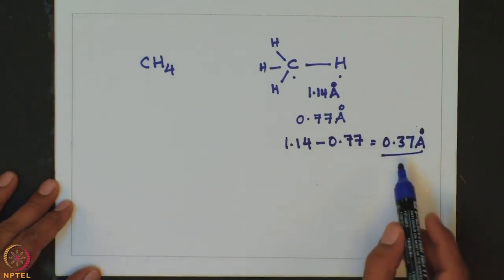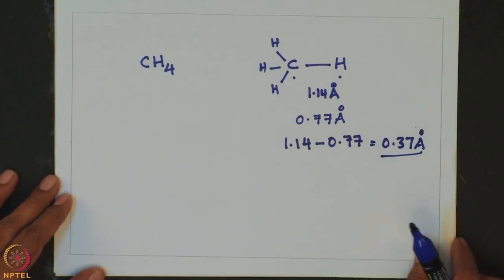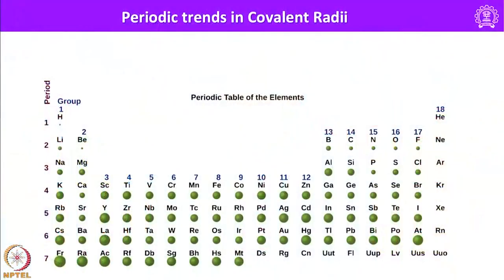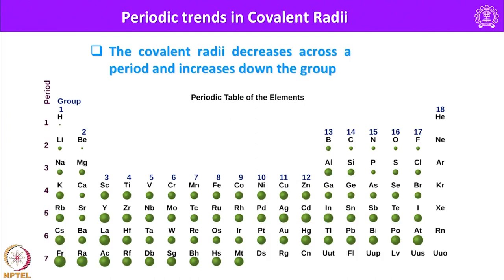This 0.37 Å is essentially the covalent radius of hydrogen. This is how the covalent radius of an unknown atom can be calculated just by measuring the internuclear distance and knowing the covalent radius of one of the atoms. This periodic table displayed here shows the trend in covalent radii: the covalent radius increases down a group and decreases across a period. What one should remember is that covalent radii decrease across a period and increase down a group. Now let us look into the ionic radius.